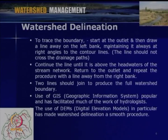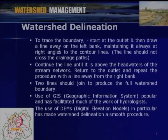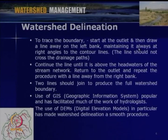Our discussion here is about watershed delineation. To delineate the watershed, we trace the boundary — starting at the outlet of the watershed, we draw a line away on the left bank maintaining it always at right angles to the contour lines. The watershed boundary always crosses contour lines at right angles. The line should not cross the drainage path.